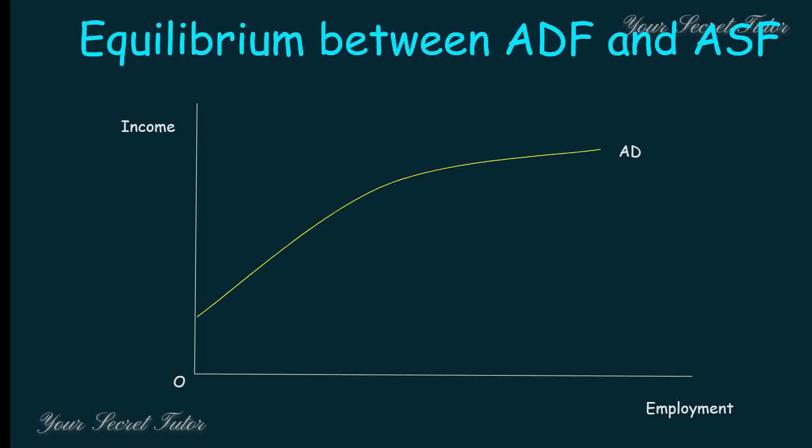The Aggregate Demand curve does not start from the origin — it starts from the y-axis. This is because consumption is autonomous. Even if there is no income, there is still some autonomous consumption, which creates the gap at the y-axis intercept.